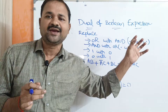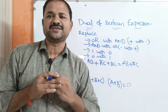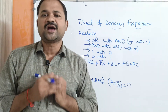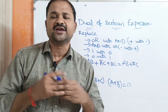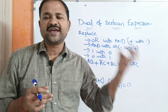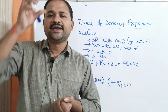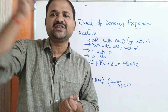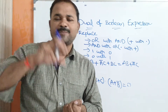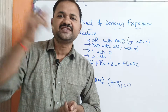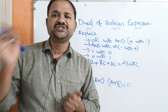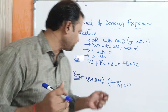So, it is very simple. In order to obtain the dual of a Boolean expression, what we have to do: replace dot with plus, plus with dot, 1 with 0, and 0 with 1.